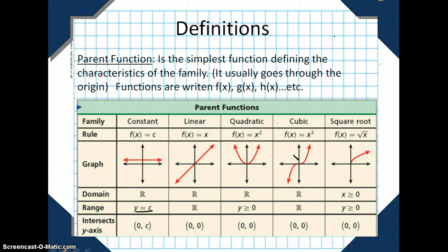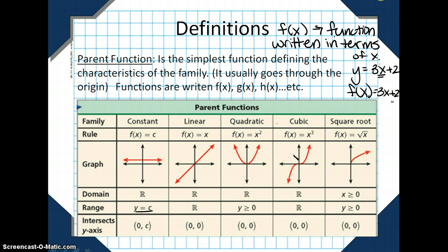The key is how I am saying it. So f parentheses around an x means function written in terms of x. So y is equal to 3x plus 2 is an equation written in terms of x because x has all the stuff being done to it. So f of x is equal to 3x plus 2 would be a function that's written in terms of x because x is the stuff that everything is being done to.